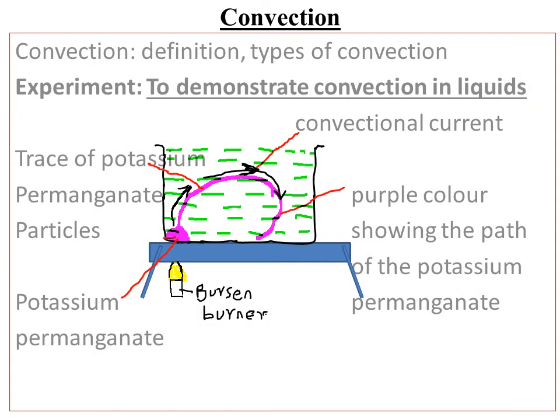Now let's look at convection. Convection refers to the process by which heat is transferred through fluids — either liquids or gases. Convection involves the actual movement of fluids by convectional currents, and this could be either natural or forced. Those are the two types of convection.